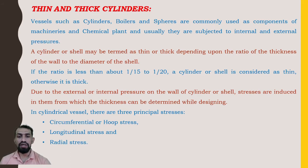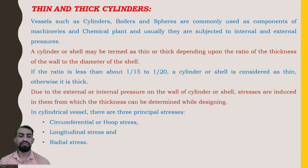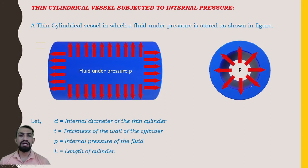Due to external or internal pressure on the wall of a cylinder or shell, stresses are induced, from which the thickness can be determined during design. In a cylindrical vessel, there are three principal stresses: first, circumferential or hoop stress; second, longitudinal stress; and third, radial stress. We now move to the next part: a thin cylindrical vessel subjected to internal pressure.